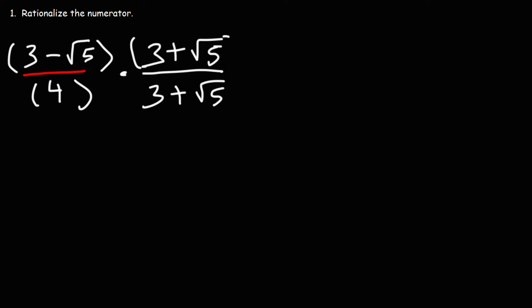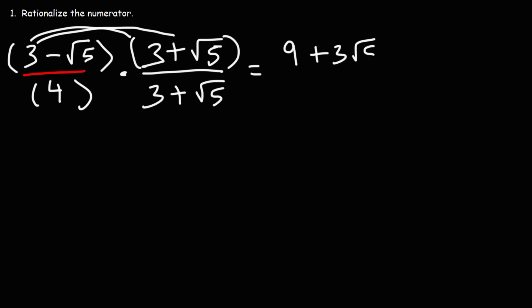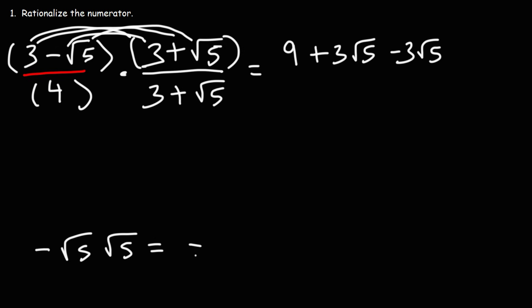So let's go ahead and FOIL the two numerators of the fractions. We have 3 times 3 which is 9, and then 3 times the square root of 5, so that's plus 3 root 5, and then negative square root 5 times 3, so that's minus 3 root 5. Negative square root 5 times square root 5: well 5 times 5 is 25 and the square root of 25 is 5, so we get minus 5.